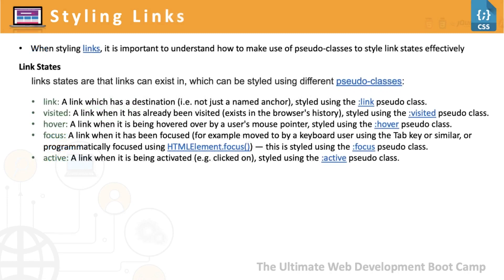Styling links is very important. We use pseudo-classes to style links based on their link states — when the link is active, when it's just a link, when it has been visited, when you are hovering the mouse over it, and when it has focus, for example via keyboard. The pseudo-classes we use are: :link, :visited, :hover, :focus, and :active. We'll see how to use these pseudo-classes to style our links.